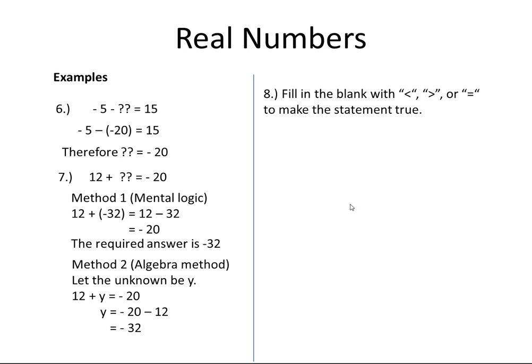This type of question requires us to compare two numbers. We want to compare the absolute value of minus 20 minus 12 to minus 32. The value of the absolute value of minus 20 minus 12 is equal to the absolute value of minus 32. The absolute value of minus 32 is 32. Positive 32 is bigger than minus 32, so our correct answer is greater than.